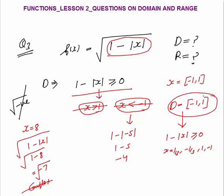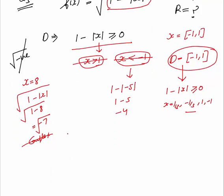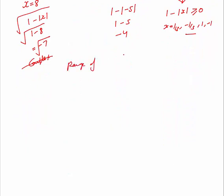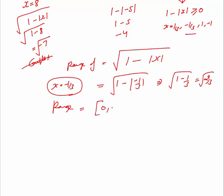So the domain of this function is minus 1 to 1. What will be the range? Range means the set of output values. The output will always be positive. Even if you put x = minus 1 by 3, it acts as 1 by 3 due to mod. I am calculating the range of √(1 - mod x). The output is always positive. So the range is 0 to 1 — both are included. If you put x = 0, range is 1; if you put x = 1, range is 0. So range is 0 to 1.